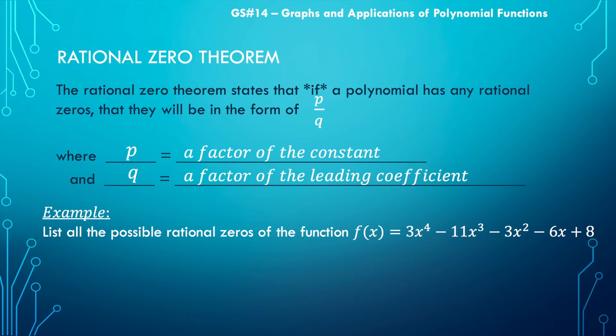Let's list all the possible rational zeros of the function f(x) = 3x^4 - 11x^3 - 3x^2 - 6x + 8. So notice this is saying list all the possible rational zeros, so all the possibilities.